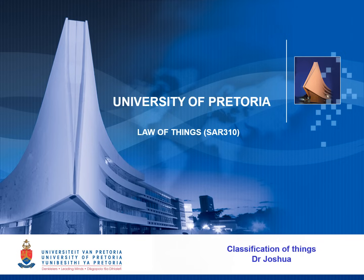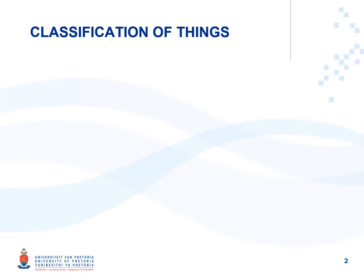Hello, this presentation deals with the classification of things. In the previous narration we identified when an object would qualify as a thing, so we know when objects would qualify as things. What we now need to establish is the type of thing that we are dealing with, once we've established that something is indeed a thing.